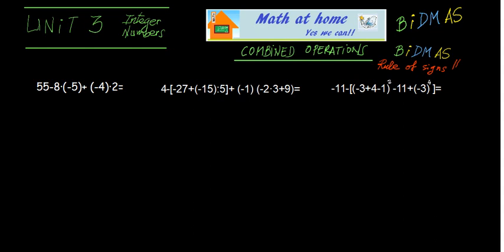Let's do it. What do we have here? We can find some products, additions, subtractions, and these brackets. These brackets are used to isolate the negative number, so they are not real brackets — we can remove them without solving inside. So we say 55, and now we have to solve the products first. Let's solve the product: negative times negative is positive 40, and the other one is negative times positive, which is negative minus 8.